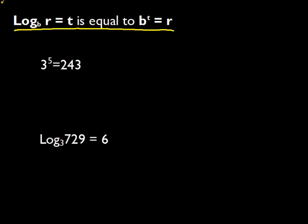We want to convert this exponent into a logarithm. The way we do this, we simply find out what our values of b, t, and r are, and then plug them into our other conversion factor. We have an exponent, which is the same as b to the t power equals r. b is 3, t is the same thing as 5, and r is the same as 243.